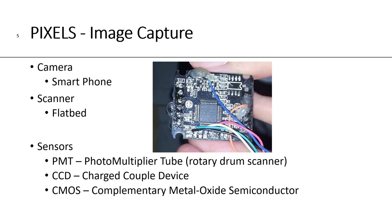Pixels per inch, PPI, is commonly used for image capture — something like a camera or a smartphone, or a scanner, typically flatbed. The sensors inside these devices are old-style PMT photomultiplier tubes found in old rotary drum scanners. That went to CCD, charged couple devices, and now the current technology is called CMOS, which is complementary metal oxide semiconductors.